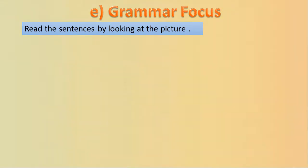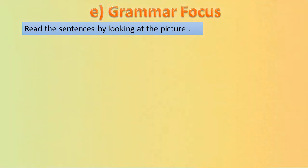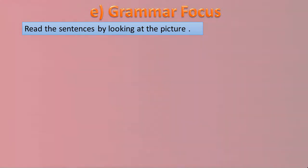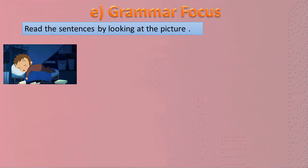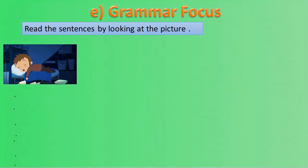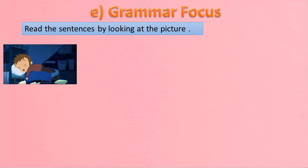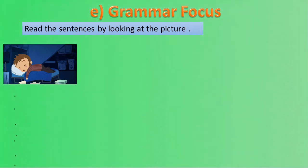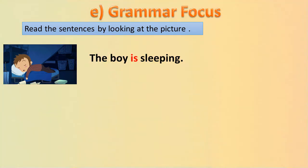Grammar focus: Read the sentences by looking at the picture. Ab hum ne sentences ko read karna hai un ki pictures ko dekhte hue. As we have a picture — what is the boy doing? He was sleeping. Ji, aur ek person hai jo so raha hai, ek se zyada nahi hai. To hum is ka sentence kya banayenge? The boy is sleeping.